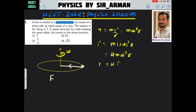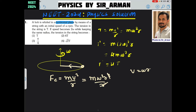What is the equation for the centripetal force? Fc equals mv² / r. Since v equals ωr, we can substitute v² with ω²r² / r, so r cancels and the equation becomes mω²r. This is the centripetal force, and since it is balanced by the tension, we can say T equals mω²r.